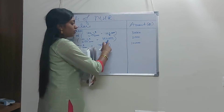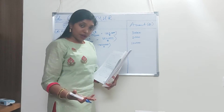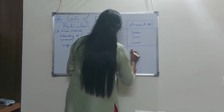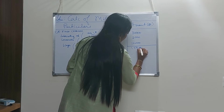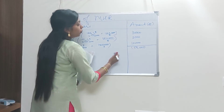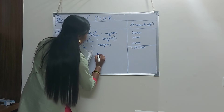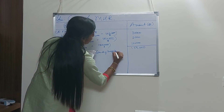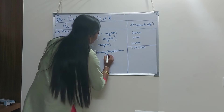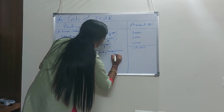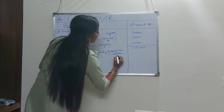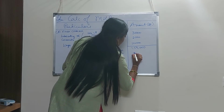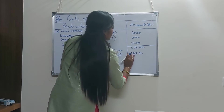We calculate for 2,000 hours because the entire problem is given on a per annum basis, and for one year the total working hours is 2,000 hours. The total fixed charges amount to 1,55,000 rupees. Standing charges per hour = 1,55,000 ÷ 2,000 hours = 77 rupees 50 paise. This is the standing charge per hour.